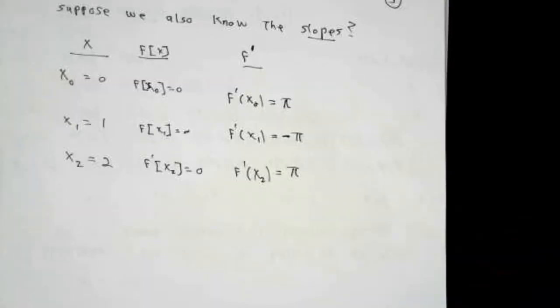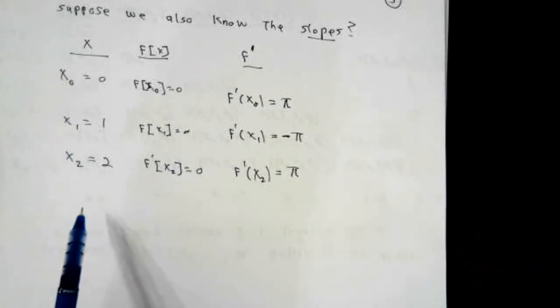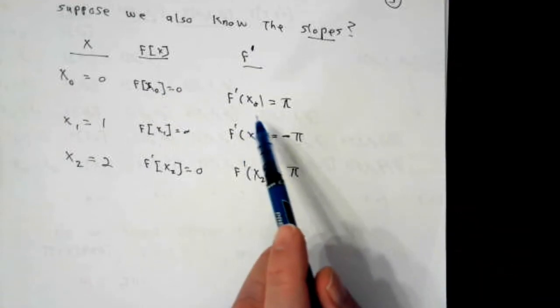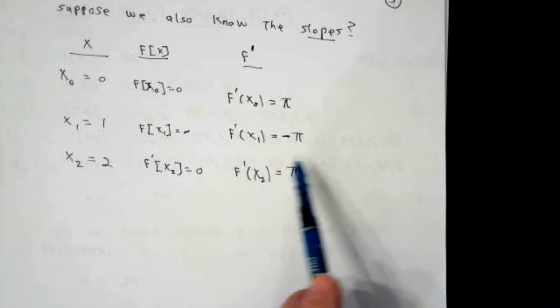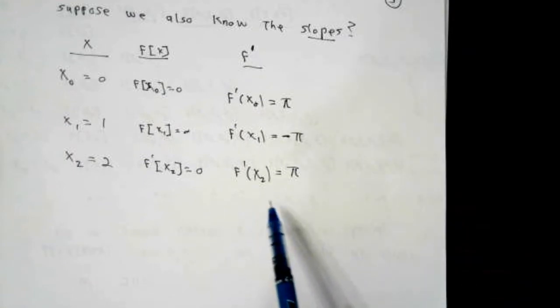To pursue our Hermite interpolating idea, I'm going to have not only the x values and the function values, which in this particular example are all 0, but I'm also going to tell you the slope of the tangent line at x0 is π, the slope of the tangent line at x1 is negative π, and the slope of the tangent line at x2 is back to being π again.